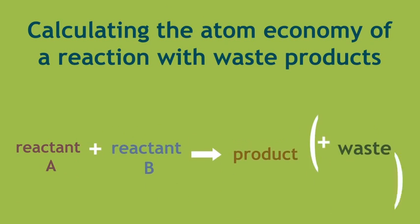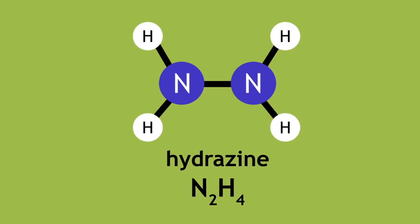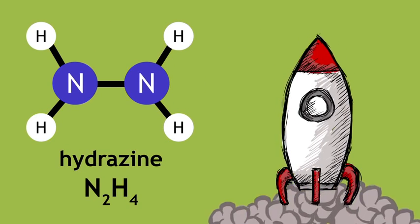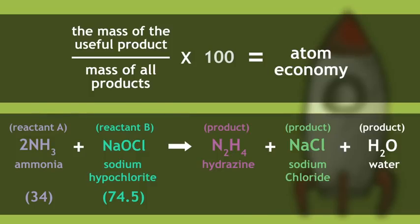So now, let's take a look at calculating the atom economy of a reaction with waste products. Hydrazine is a useful rocket fuel. It can be made in the following reaction. Pause the video now and attempt to calculate the atom economy.